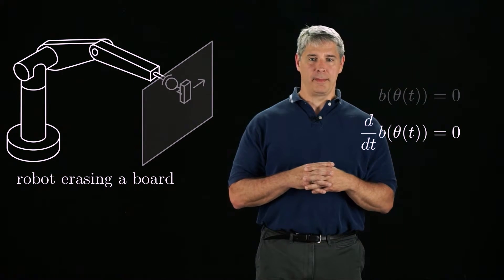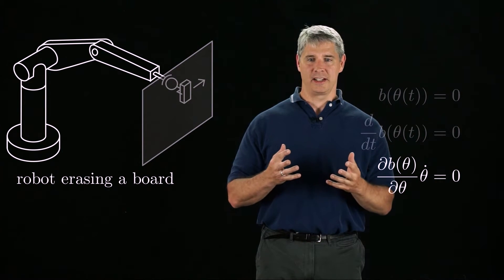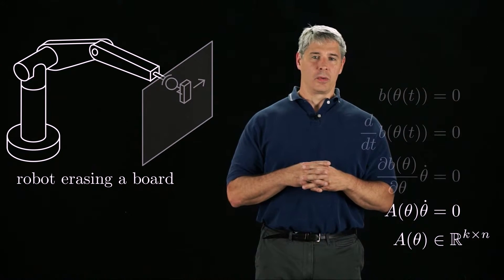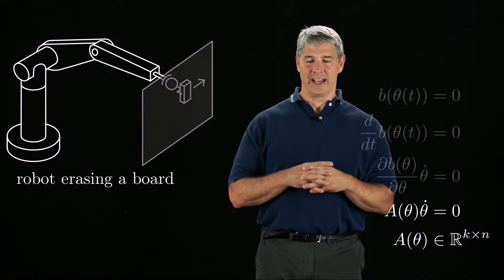By the chain rule, the time derivative can be expressed as the matrix of partial derivatives of b with respect to theta times theta dot, or A of theta times theta dot for short, where the A matrix is k by n, representing k velocity constraints on the n joints of the robot.